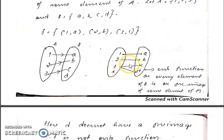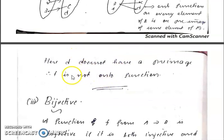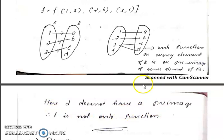The first example is not onto because D does not have a pre-image, so F is not onto. That statement applies to that first diagram.